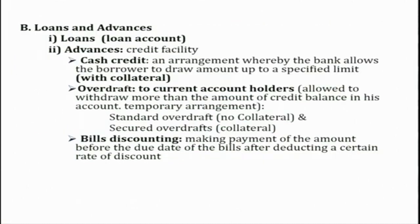Coming to fixed deposit accounts, this is a time-period investment. And the recurring deposit account is where one invests at regular intervals, say monthly — that is called a recurring deposit account. Banks also give loans through a loan account. They also give advances — this is a credit facility. Cash credit is given with collateral, and banks also give overdraft, which is mainly given to current account holders, allowing them to withdraw more than the credit balance in their account. There is a standard overdraft with no collateral and other forms with collateral.